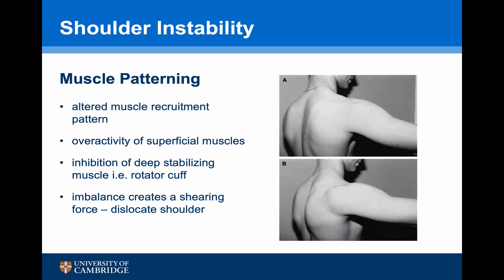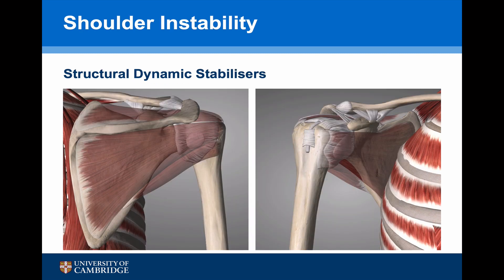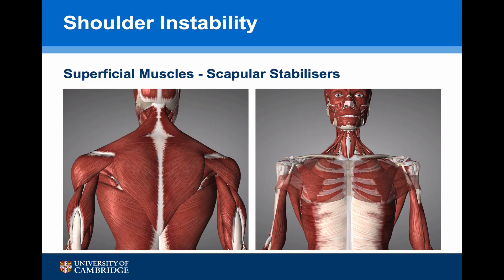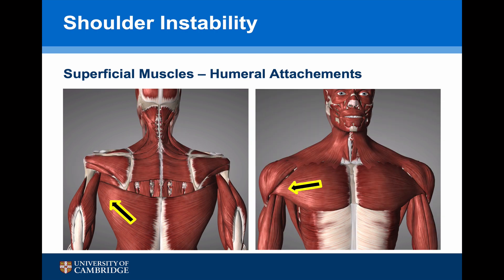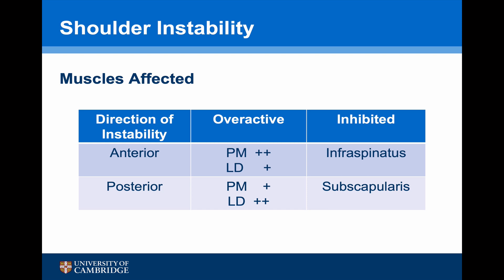This imbalance can create a shearing force which dislocates the shoulder. The structural dynamic stabilizers are the rotator cuff muscles, while the key superficial muscles are the scapula stabilizers such as the trapezius and rhomboids, and the humeral attachments — particularly latissimus dorsi and pectoralis major — which are the two muscles most frequently involved in muscle patterning. In general, when the direction of instability is anterior, pec major tends to be particularly overactive with some inhibition of infraspinatus; for posterior instability, pec major is less involved with latissimus dorsi being more involved and subscapularis being inhibited.